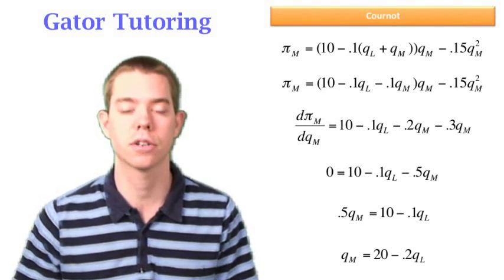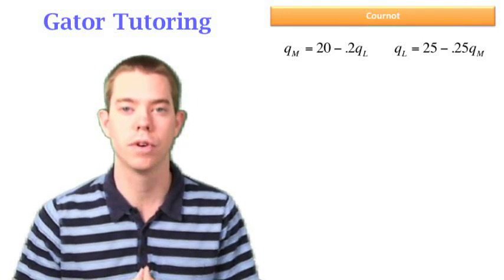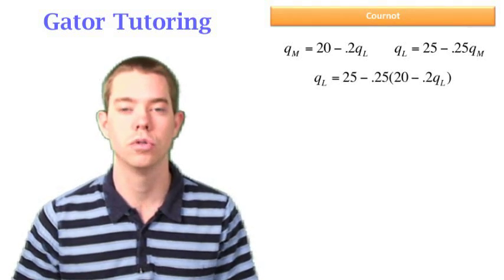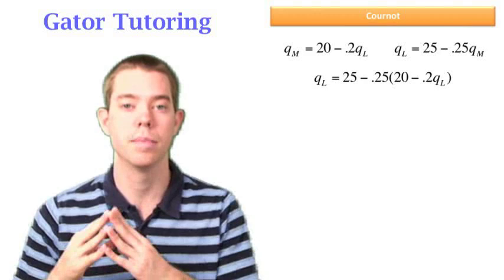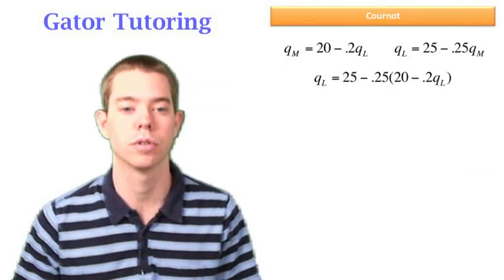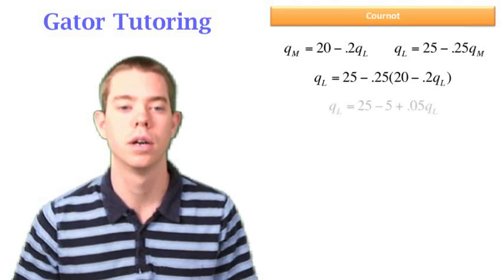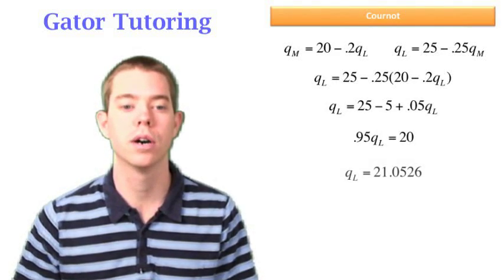So now that we have both reaction functions, we're ready to solve for each variable. Because remember, we have two variables and two systems of equations. We can use substitution to solve. We can choose either way. I've chosen to start with Larry's reaction function and plug in Matt's reaction function. So we plug in 20 minus 0.2 QL for QM and we're ready to solve. We solve for QL is equal to 21.0526.